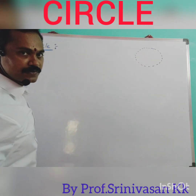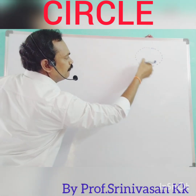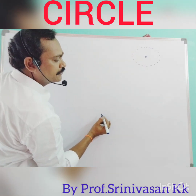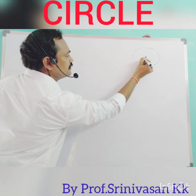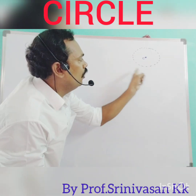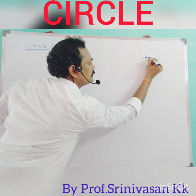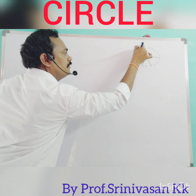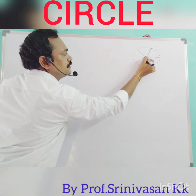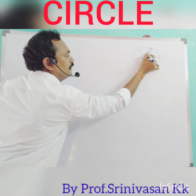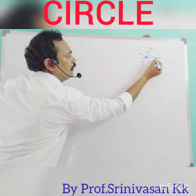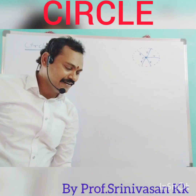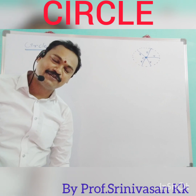These are a set of points, and this is a fixed point — let us suppose it is C. If you observe, all of these points maintain a constant distance from the fixed point. That distance, let us suppose, is R. This is a circle.